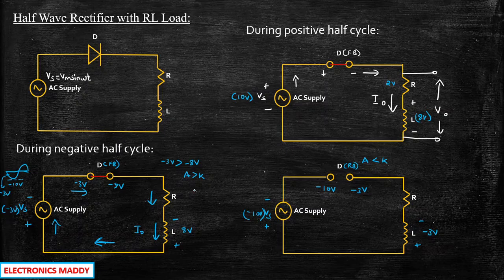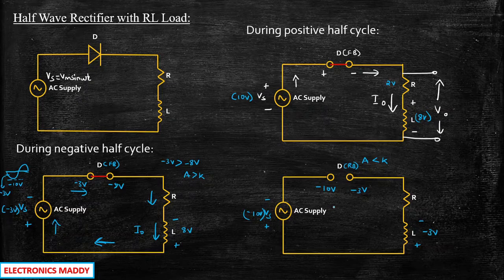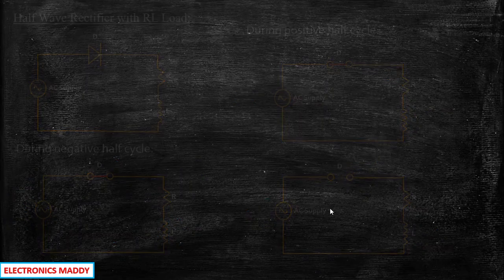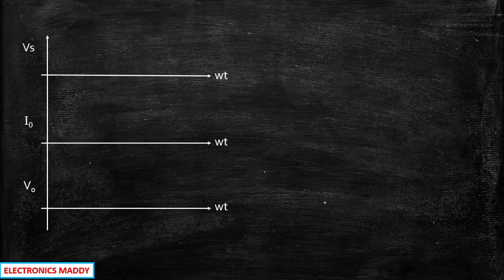So in the negative half cycle, case one is that current will still be flowing. Beyond some point, the current will not flow. Why is this point important? Because in waveforms, it is very important for us.